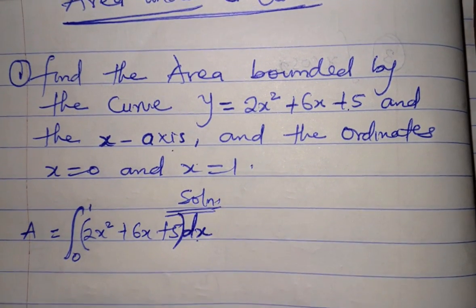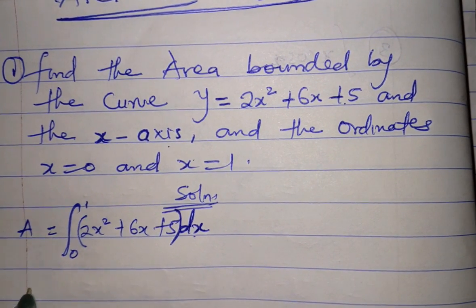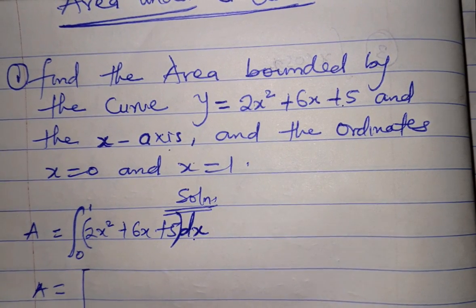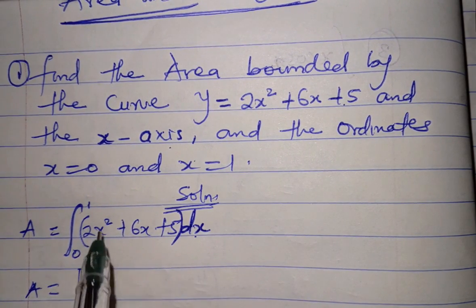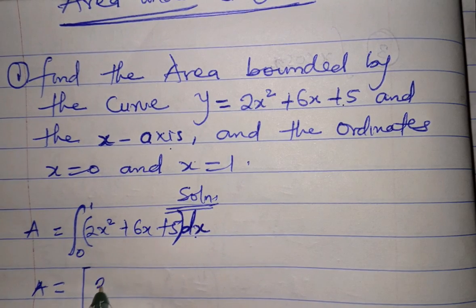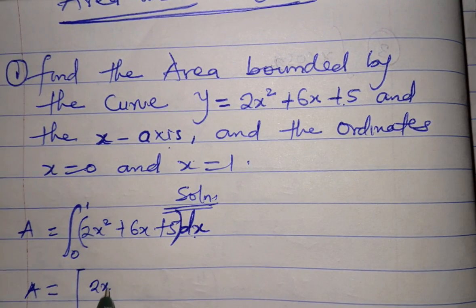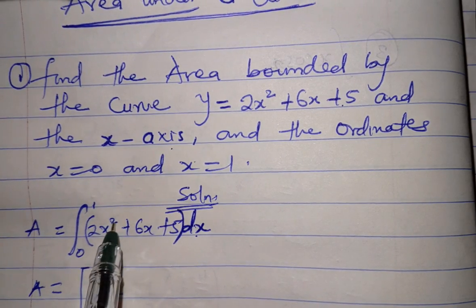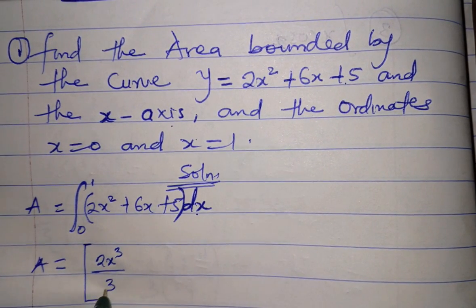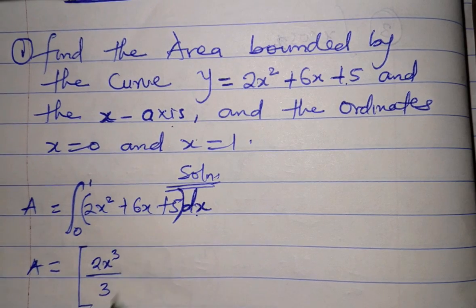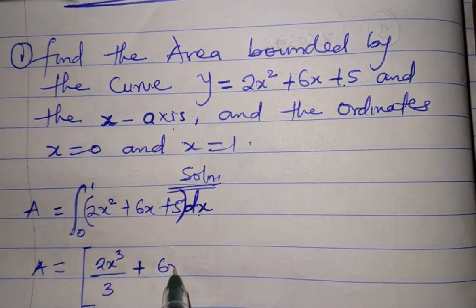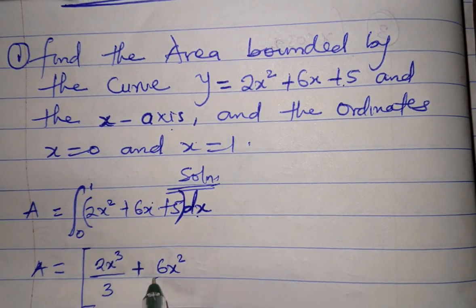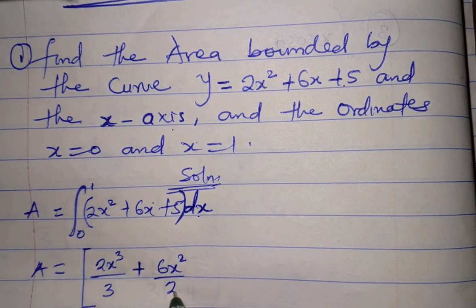We'll integrate it term by term. The area is: integrate 2x² - that would be 2x³, add 1 to the power to get 3, divided by 3. Plus, integrate 6x - that would be 6x². As the power here is 1, 1 plus 1 is 2, divide by that same 2.